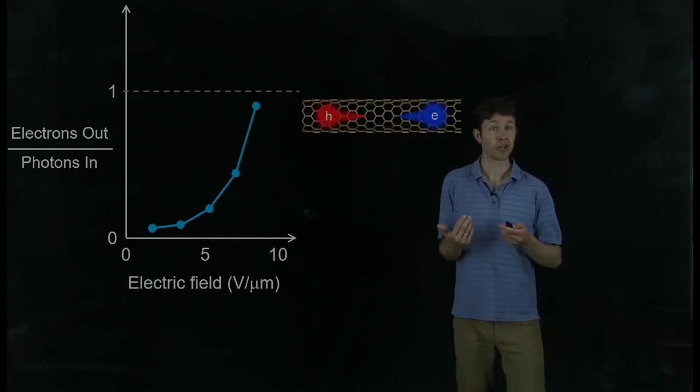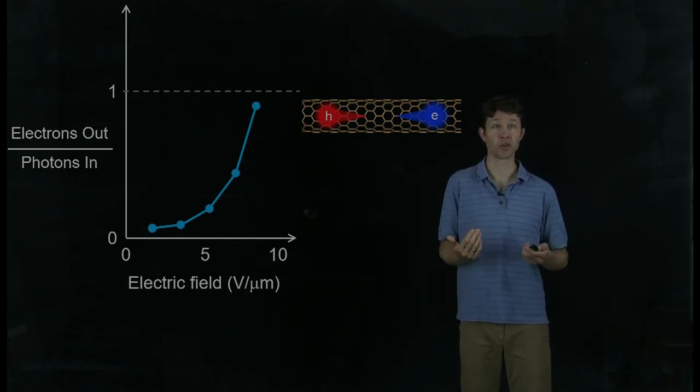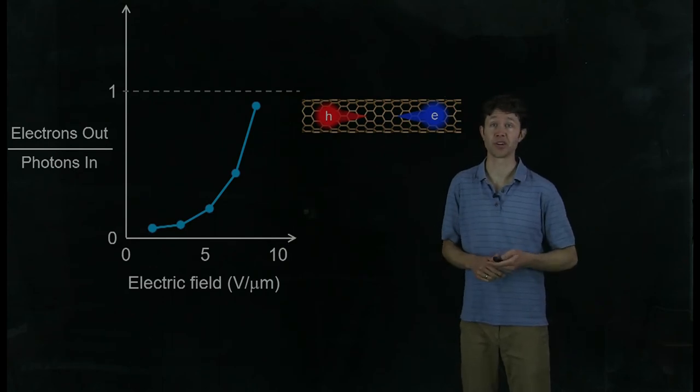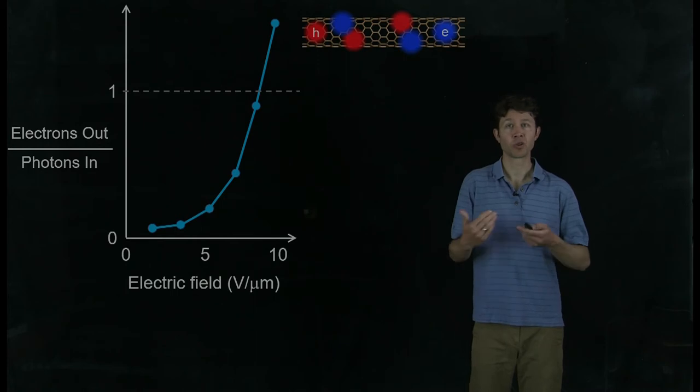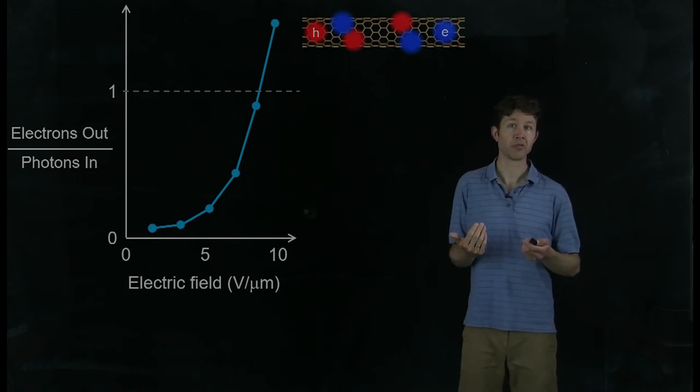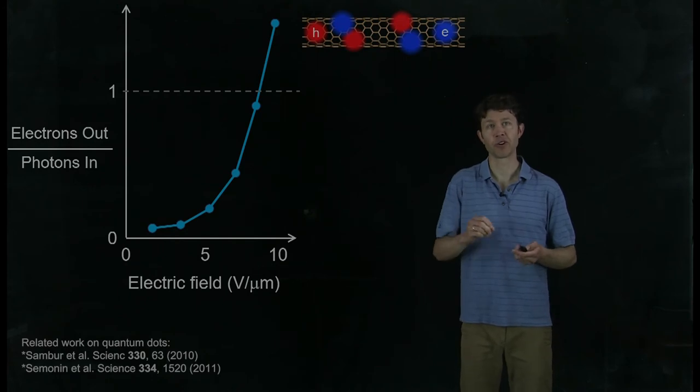We had to go to very high electric fields to even get one electron per photon out. And this is where we've come on par with what happens in a typical silicon solar cell. But the exciting thing happened at a slightly higher field. We could cross this limit of pulling more than one electron out of the device for every photon that was being absorbed.